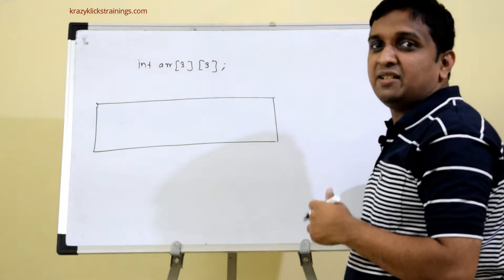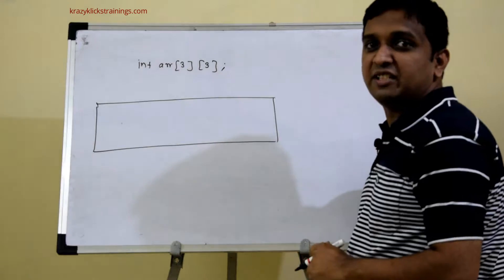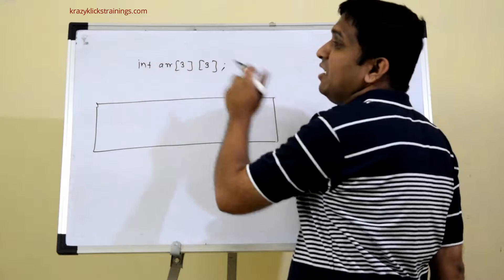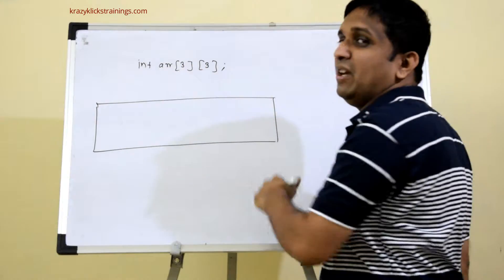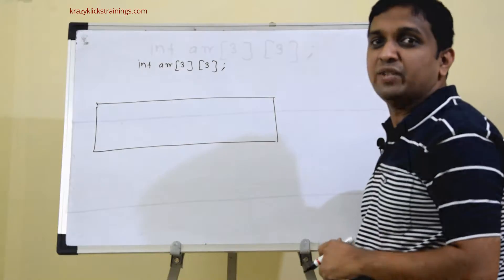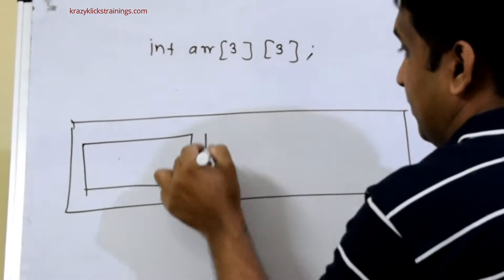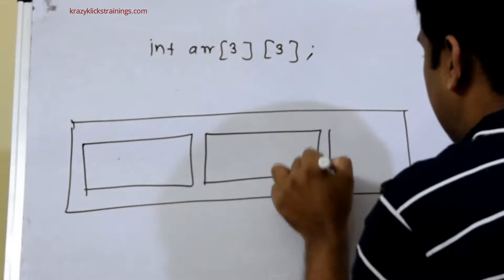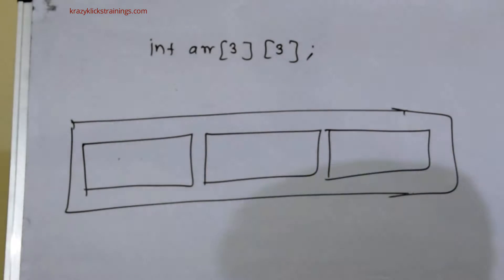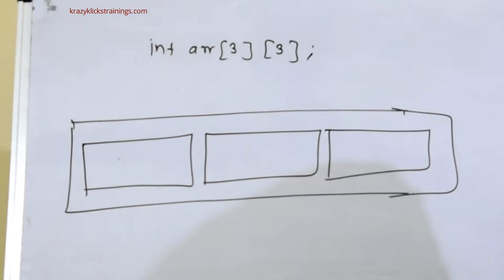A 2D array is an array of 1D arrays. When I say ARR[3][3] — row size 3 and column size 3 — ARR is an array of 3 elements where each element is one array of 3 integers. So it will allocate 36 bytes, and these 36 bytes will have the first 1D array, second 1D array, and third 1D array.